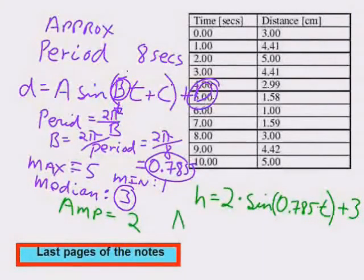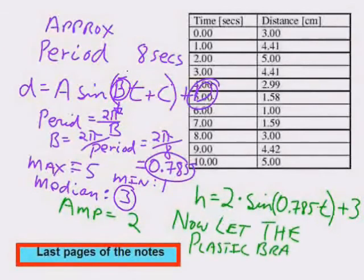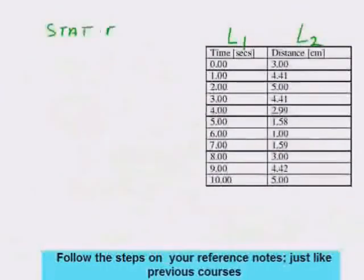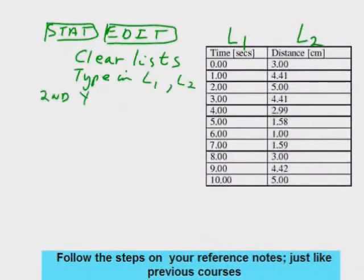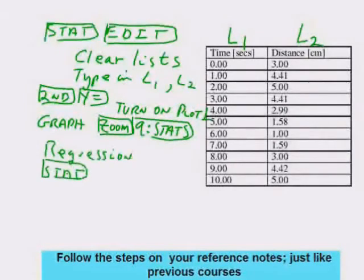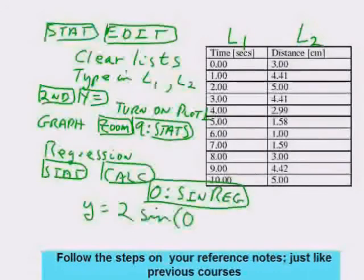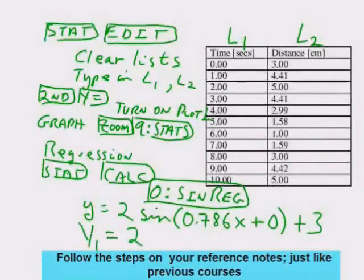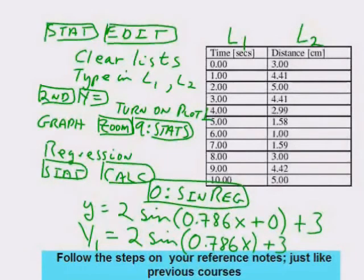Here's the question from our practice test. Let's see what the plastic brain tells us. Put the time in list 1, the distance in list 2, run stat calculate sinusoidal regression — number 0 — way down at the bottom. Look at what it tells you: isn't that remarkably like the equation I suggested just by looking at the information? I came up with practically the exact same formula by inspection.